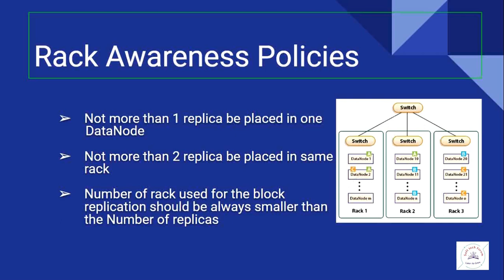The second policy says you cannot keep more than two replicas in the same rack. The first mechanism ensures not more than one replica per data node, so if one data node goes down we have another replica in the same rack. The second mechanism says keep at least one replica in the nearest closest rack. The name node keeps all rack ID information and uses its own mechanism to determine how data will reside in the closest rack. By following these policies, we achieve a fault tolerant and low latency cluster.